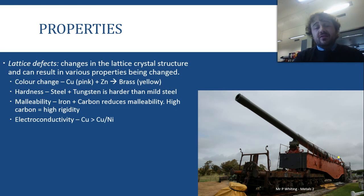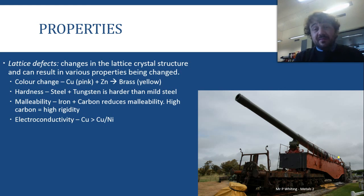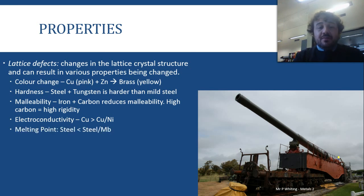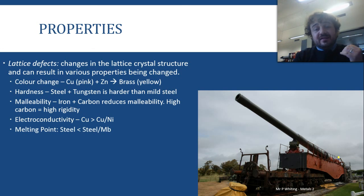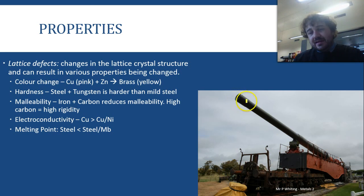Electroconductivity can also change — copper-nickel alloy, which is what we use for pipes, is not nearly as electrically conductive as straight copper. And melting point: steel will melt at a lower temperature than steel plus molybdenum (Mo).